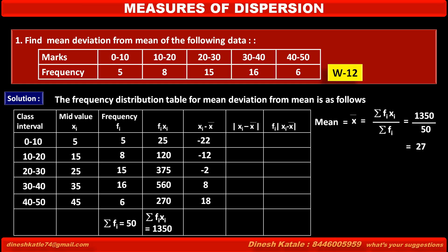Now in the next column, we find the absolute value of each deviation to get positive values. So: −22 becomes 22, −12 becomes 12, −2 becomes 2, 8 remains 8, and 18 remains 18.